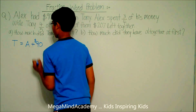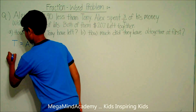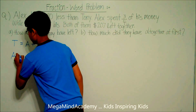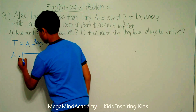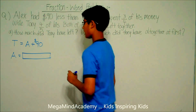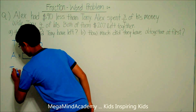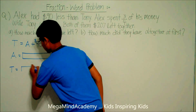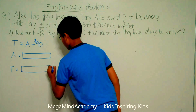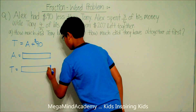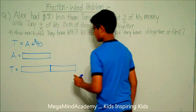Now let's draw this out. Let's say that Alex — A for Alex — is equal to this big unit. And Tony — T for Tony — is equal to this same unit, plus another unit, which is $90.